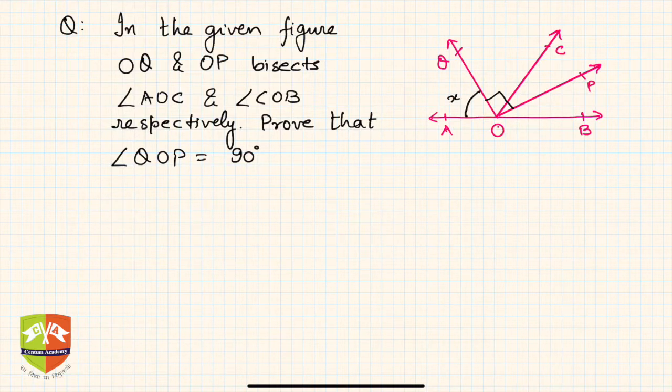That means this is x, then this is also x. An angle bisector divides the angle into two equal parts. Similarly, since OP is a bisector of angle COB, this will be y and this will be y.